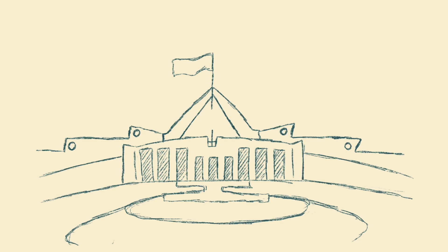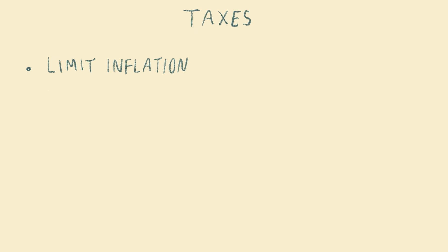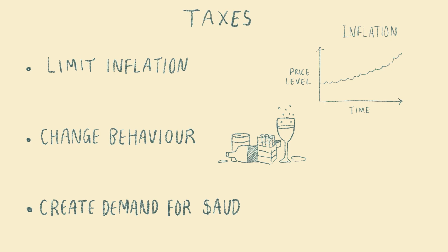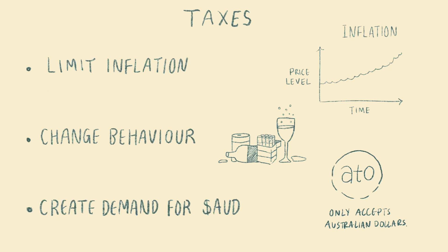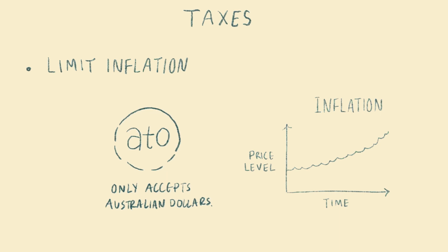Contrary to popular belief, the national government doesn't require tax money to pay for its spending. Taxes exist to limit inflation — the continual rise in price of goods and services households like to purchase — to change our behaviour, like big taxes on cigarettes and alcohol, and to create demand for the government's currency, as the ATO only accepts Australian dollars. It is necessary for us to pay taxes to keep total spending, both government and private, at a level which will not be inflationary. This leads to the second principle of MMT in part two of this video.